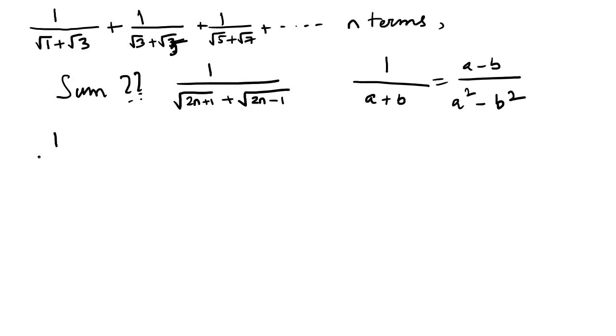So the first term will actually become 1 by root 1 plus root 3, which is equal to root 3 minus root 1 divided by root 3 squared minus root 1 squared, which is equal to root 3 minus root 1 divided by 2.